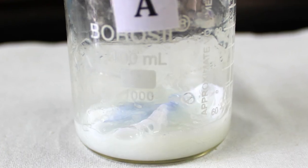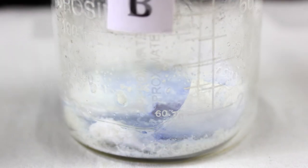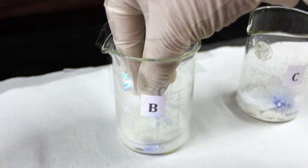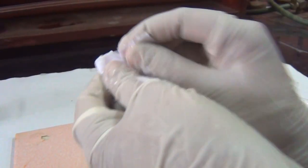Leave the three beakers undisturbed for about 10 minutes. Remove the piece of cloth from beaker A and wrap the cloth piece. Take the other two cloth pieces from beakers B and C and repeat the same step.